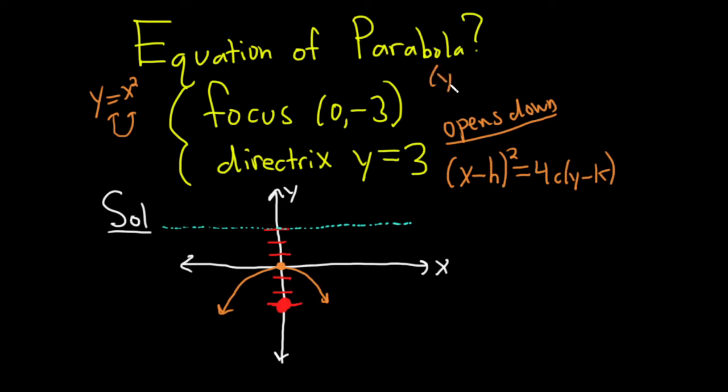If you're curious, it would be Y minus K squared equals 4C X minus H. This would be the formula if it opened left or right. One of the two. Can't open both ways, right? It's a parabola.